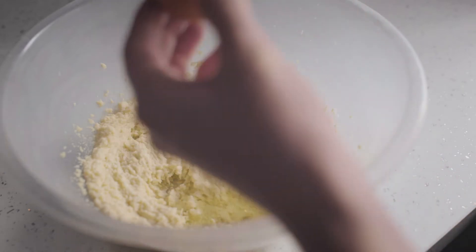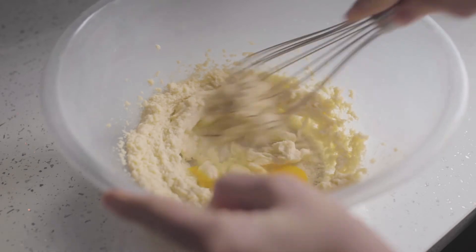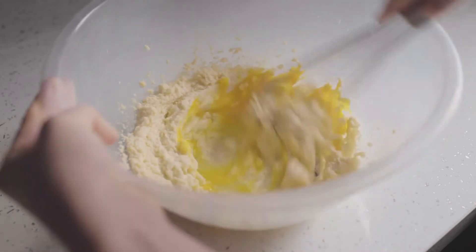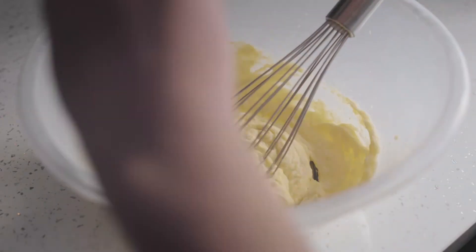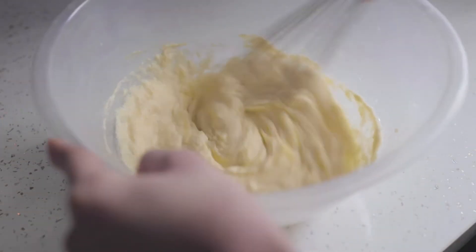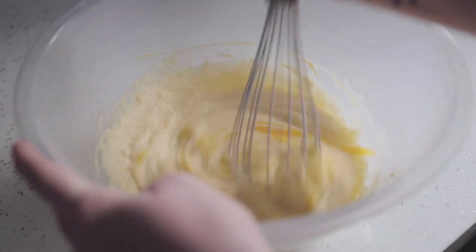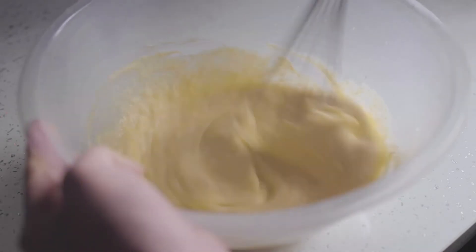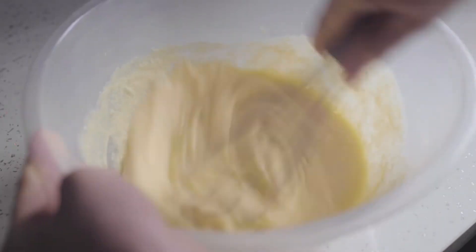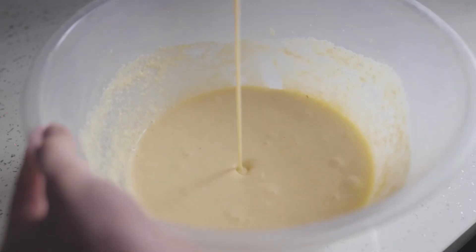Once that's done we're going to add in one egg and then whisk until it's combined and then repeat with the rest of the eggs. By the end of this you should have a lovely smooth and pale mixture and try not to leave the egg shell in there like I did.